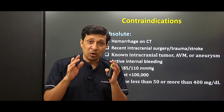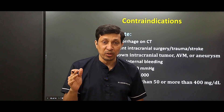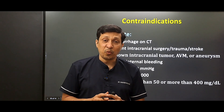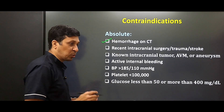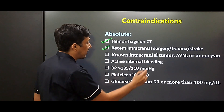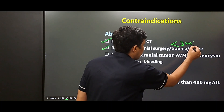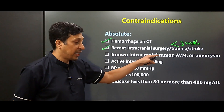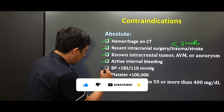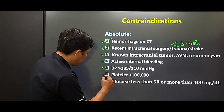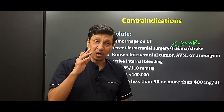Contraindications are divided into two types: absolute, where you cannot proceed in any case, and relative, where you decide case by case. Absolute contraindications include: hemorrhage on CT scan; recent intracranial surgery, trauma, or stroke (within 3 months); known intracranial tumor, AV malformation, or aneurysm; active internal bleeding; BP more than 185/110; platelet count less than 1 lakh; and glucose less than 50 or more than 400.